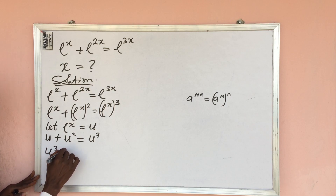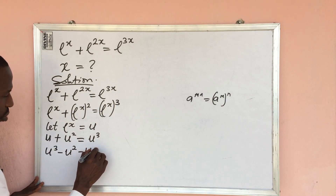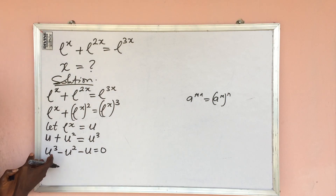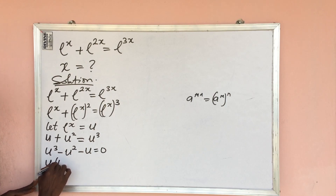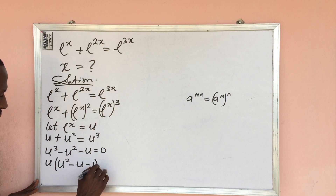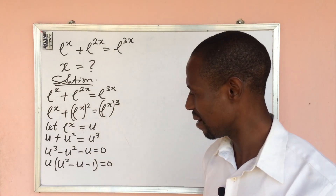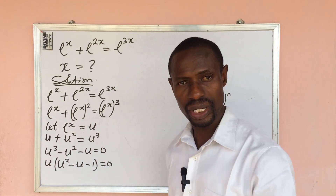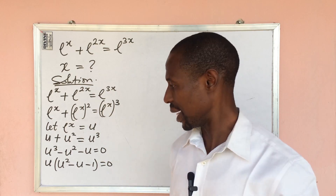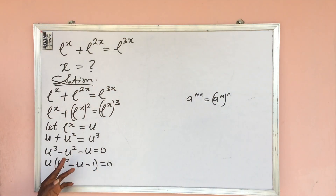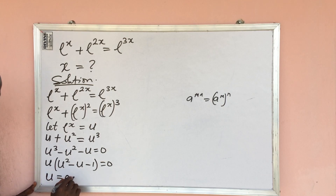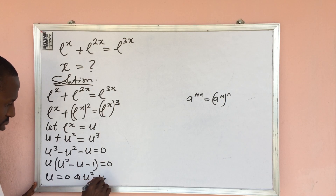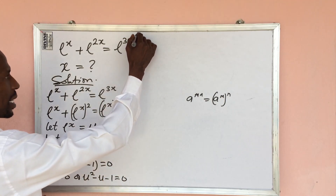When we rearrange, we get u cubed minus u squared minus u equal to zero. We have u in all three terms, so we can factor out u. That gives us u times the bracket u squared minus u minus 1 equal to zero. We then apply the zero product property, giving us u equal to zero or u squared minus u minus 1 equal to zero.